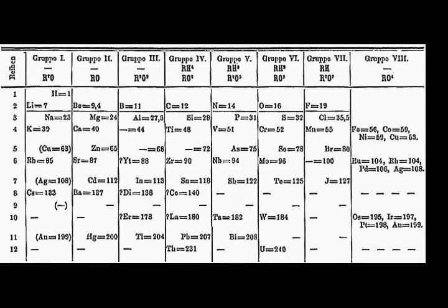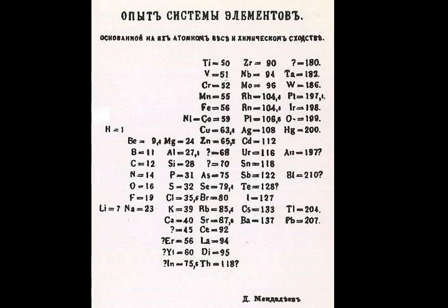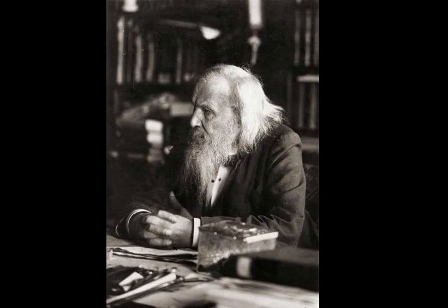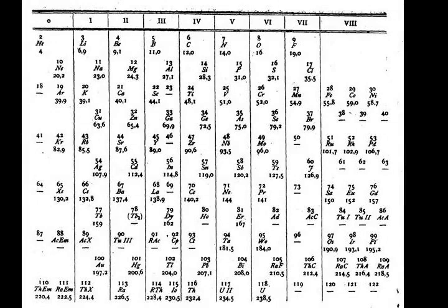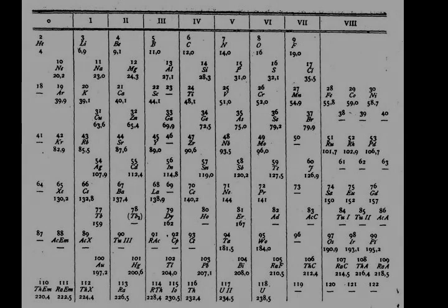Higher shells contain more types of orbitals that continue the pattern, but such types of orbitals are not filled in the known elements. The subshell types are characterized by quantum numbers. Four numbers describe an electron in an atom completely: the principal quantum number n, the azimuthal quantum number l, the magnetic quantum number ml, and the spin quantum number s. The sequence in which the orbitals are filled is given by the Aufbau principle, also known as the Madelung or Klechkowski rule.